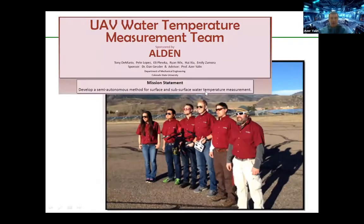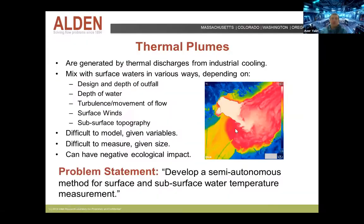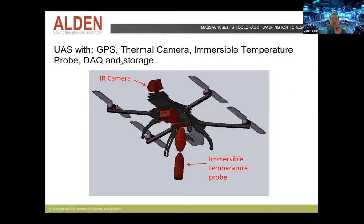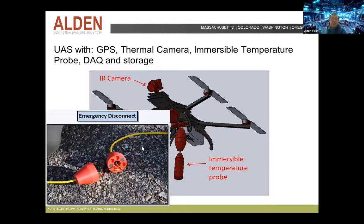I'm going to spend about two minutes to quickly showcase another project — a senior design team project. A team of final-year undergraduate students, sponsored by an industrial company called Alden, were tasked with measuring temperatures of thermal discharge from power plants. Coal generating power plants discharge heated water into little lakes and rivers, and it's important to understand how much they're heating those bodies of water — basically to avoid killing all the fish. The team developed a drone that would fly around and drop a probe that retracts downward into the water, with a safety disconnect in case the probe got stuck.